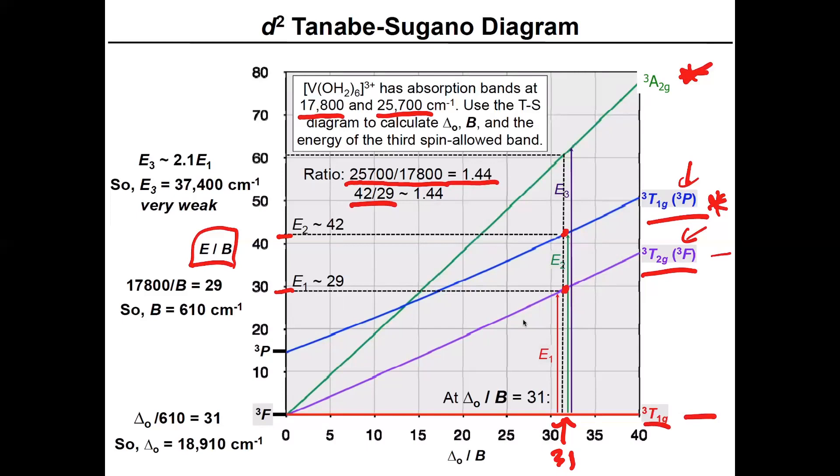So then we know, effectively, that ΔO over B coincides with 31 because we extrapolated. And then this over here is telling you we extrapolated E over B to be at 42 and 29. So what's next?